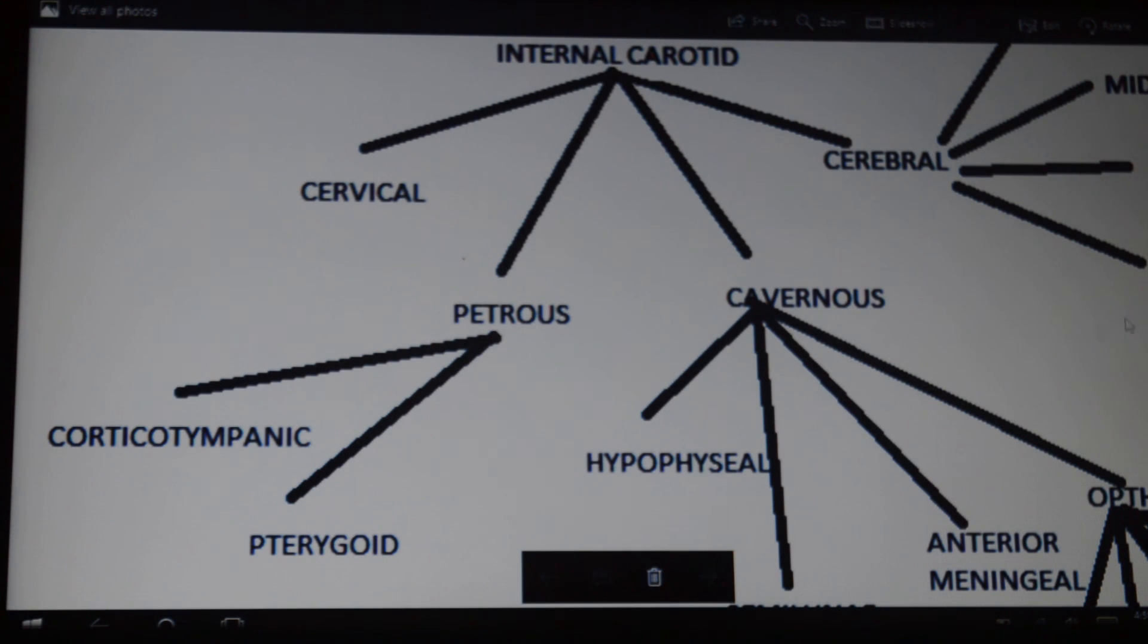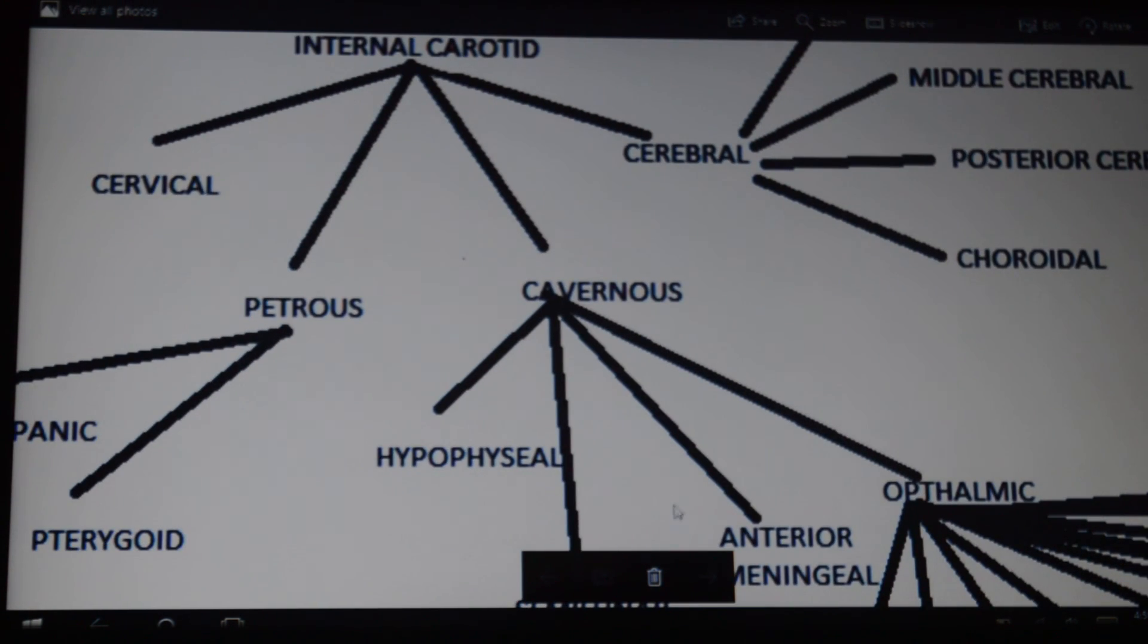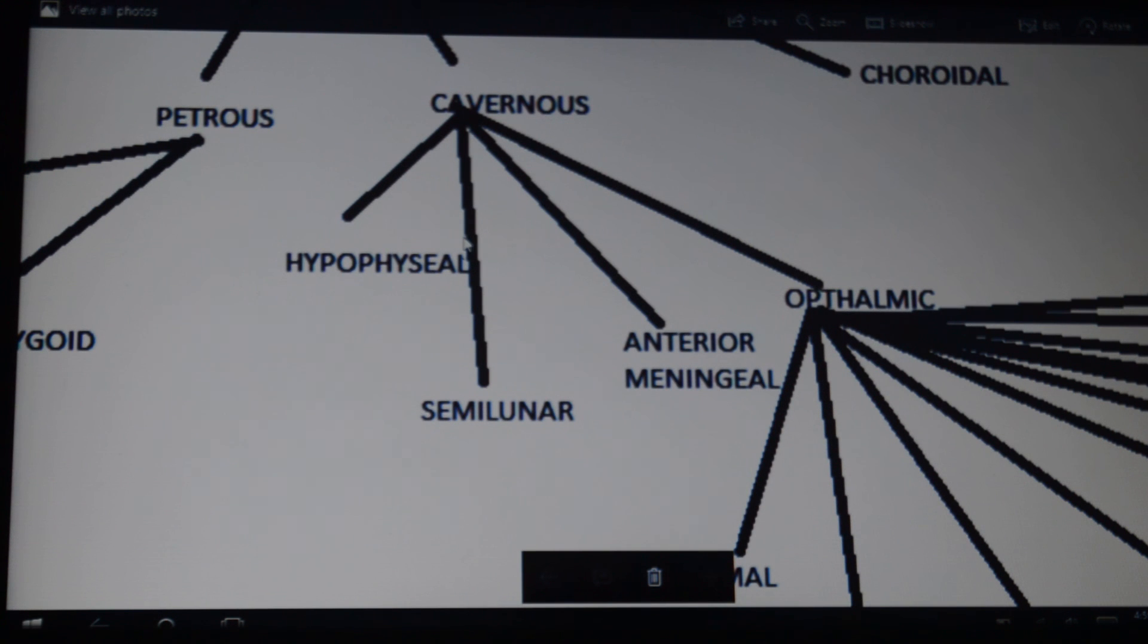Next comes the cavernous part, which has four main branches: hypophyseal, supplying blood to the hypophyseal region; semilunar, to the semilunar ganglion; anterior meningeal, to the dura mater of the brain; and the fourth is the ophthalmic artery.